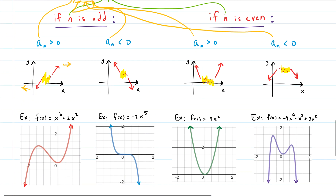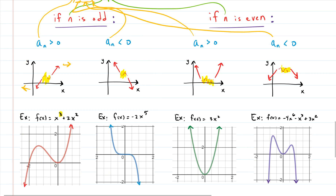Example 1: x³ + 2x². The highest power is 3, which is odd — so we're in the odd category. The leading coefficient is an implied 1, which is positive. The leading coefficient test says the function should rise to the right and fall to the left — and that is exactly what this graph does.